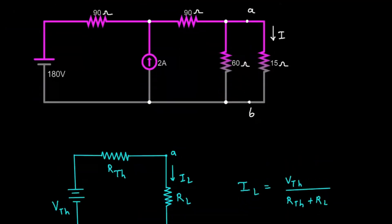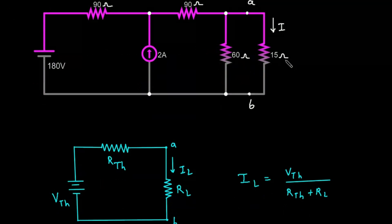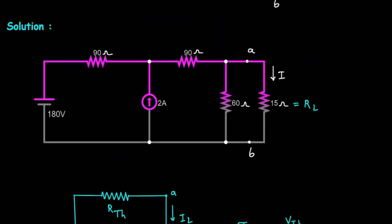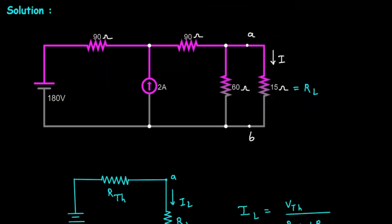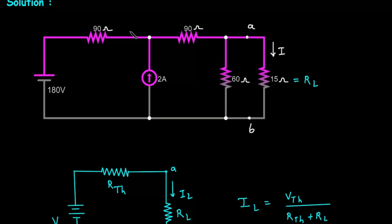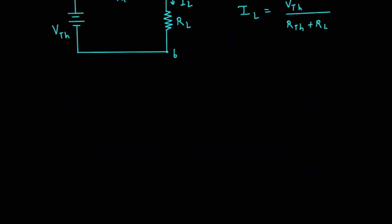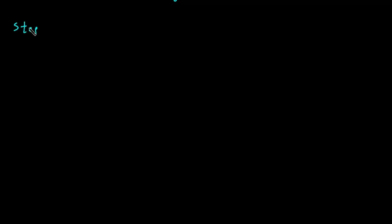Here we can see the value of RL is 15 ohm, and these are terminals A and B. We have to convert this circuit into its Thevenin's equivalent circuit. Step 1 will be: find RTH.